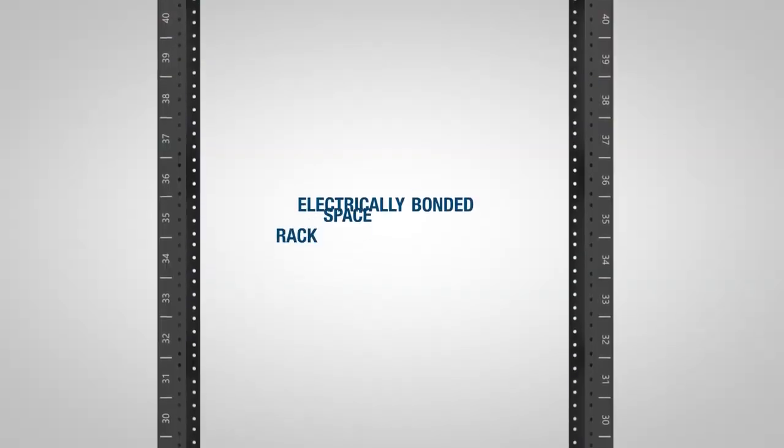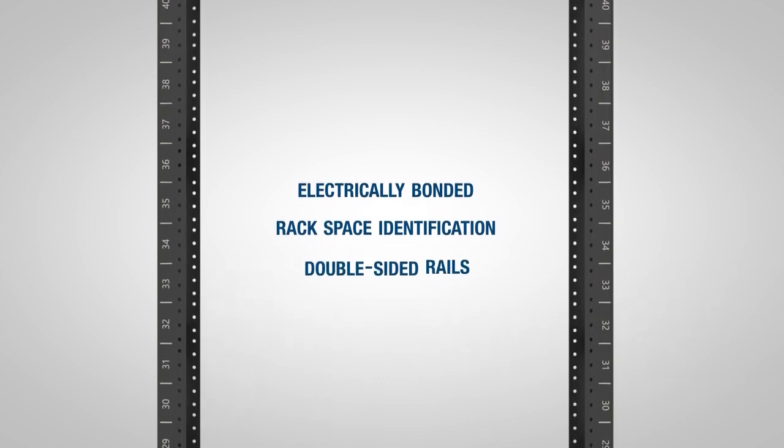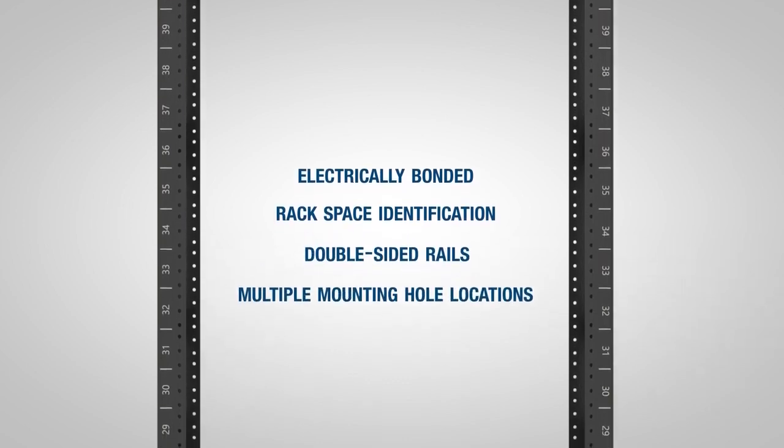Two-post racks are fully electrically bonded and come with printed rack space identification, double-sided rails, and multiple mounting hole locations.